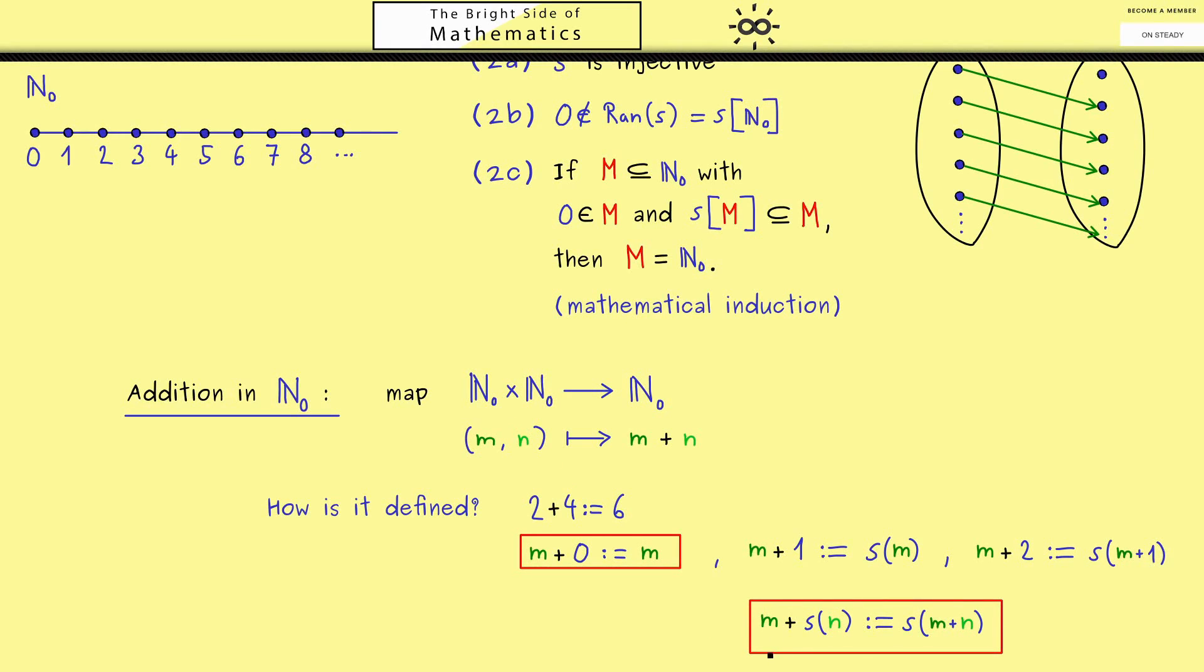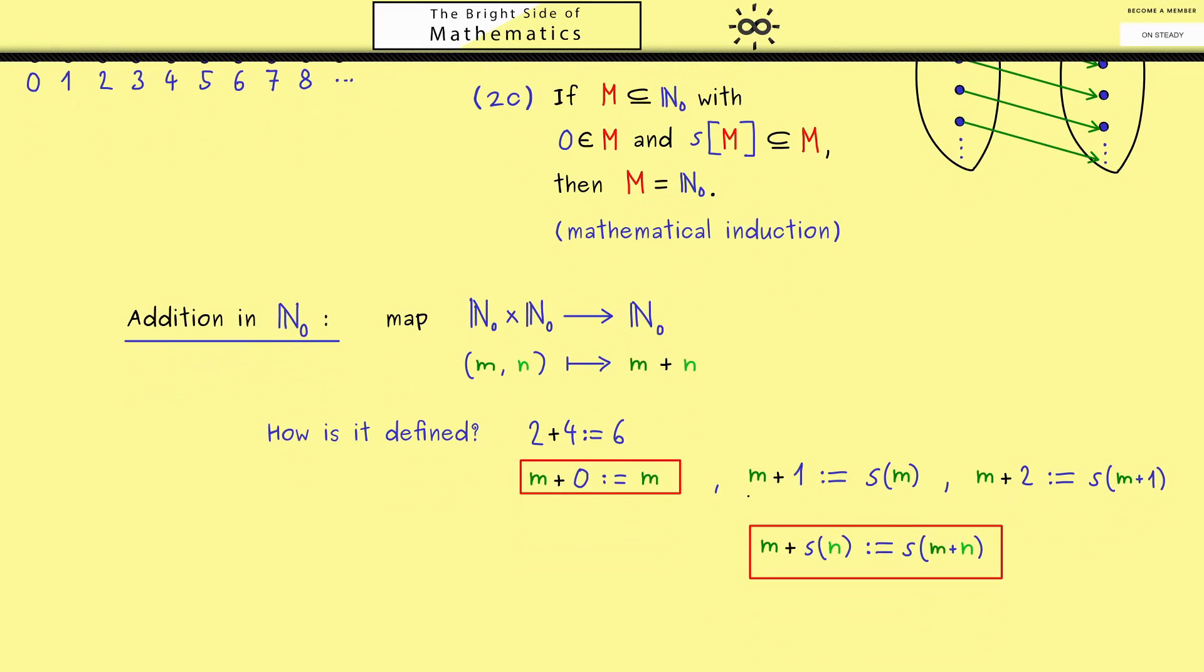However, it's a little bit strange because we don't have the explicit definition of what m + n is. For example, let's calculate 2 + 5. Now we know we can write this as 2 + s(4), and by our general definition this would be s(2 + 4). Now we can use that we already know that 2 + 4 = 6, so we have s(6), which is just 7. This means for getting a new result, we have to go backwards until we reach a step where we already know the result.